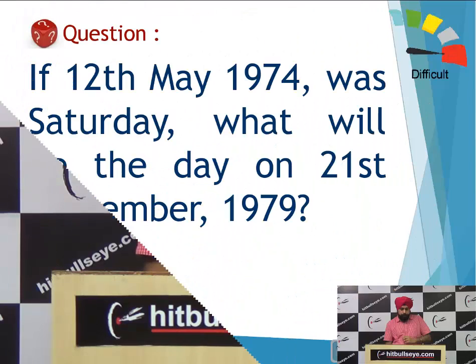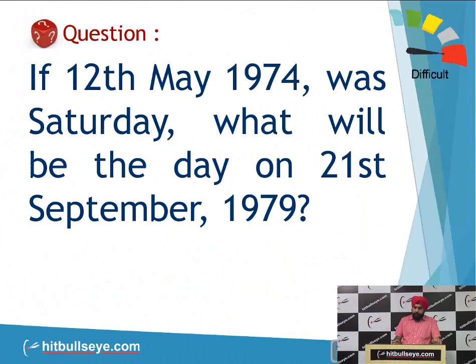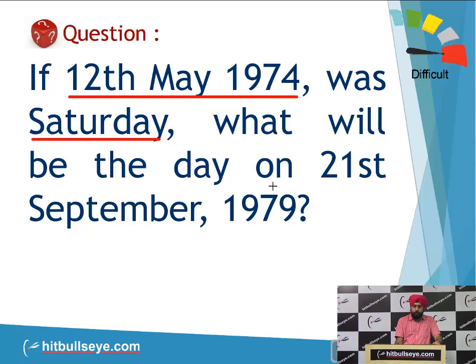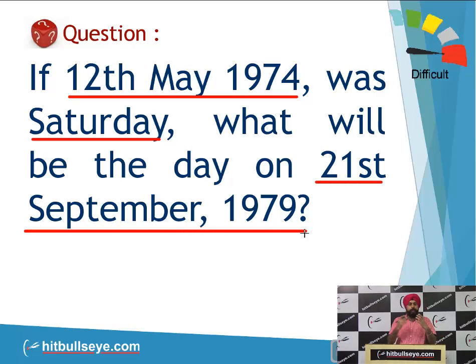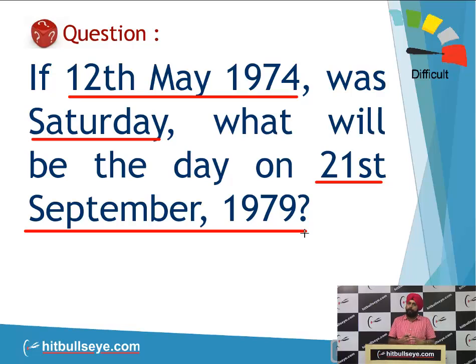Let's learn the method to solve this question. The question states: 12th May 1974 is a Saturday, and asks what will be the day on 21st September 1979. Now, you cannot simply assume 12th May 1974 would be a Saturday because the examiner's calendar may actually be different from the real calendar. So let's solve this question by addressing two different aspects.